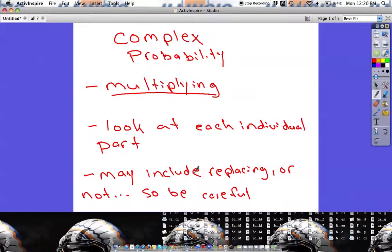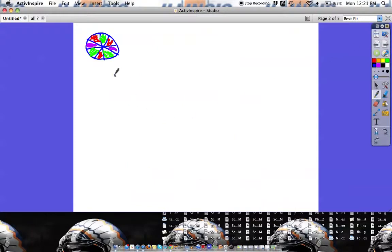And then this is going to be key, and it doesn't seem like a big deal at first, but we're going to talk about what happens if you do something where you draw something out and you put it back and then you draw something again, or if you draw something out and don't put it back and draw it again, because there's going to be a little bit of a difference between the two.